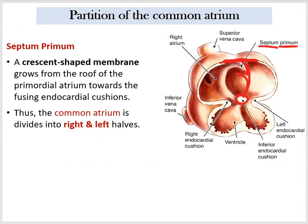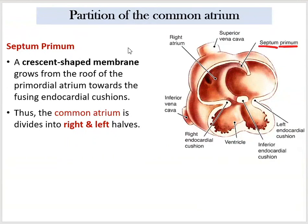Someone might ask about the opening of the heart, because we know that the fetus needs oxygenated blood coming from the mother through the inferior vena cava. Once it reaches the right atrium, the baby needs the blood shifted to the left atrium. During fetal life, we need an opening here, otherwise the fetus will die. The septum primum continues down until it reaches the endocardial cushion, and there is an opening, but before it completely closes, another opening will open.